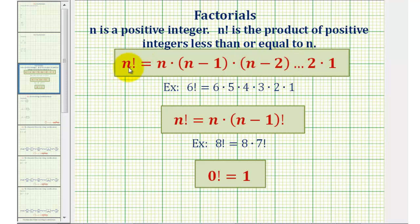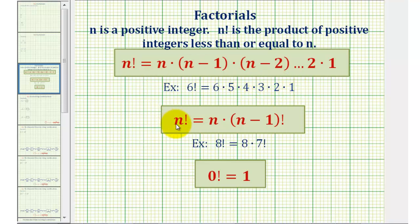Notice how for n factorial, we start with a factor of n. Each factor decreases by one until we end with the factors of two and one. So for example, six factorial is equal to six times five times four times three times two times one. It's also true that n factorial can be written as n times n minus one factorial.